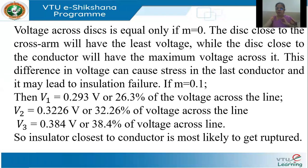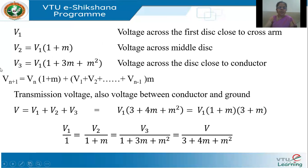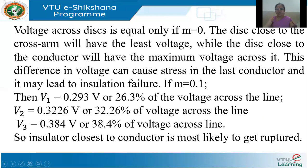When will all these voltages be equal? V2 equals V1 only when m = 0. Similarly, V3 equals V1 only when m = 0. But m = 0 means there is no shunt capacitance, which is not possible — the shunt capacitance is always present. The shunt capacitance is normally around 10 to 15 percent of the self-capacitance, meaning m is around 0.1 to 0.15 generally.